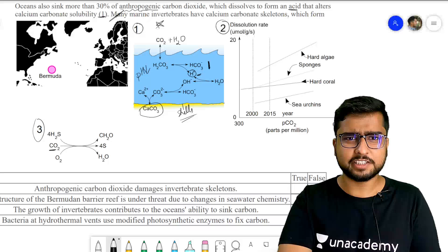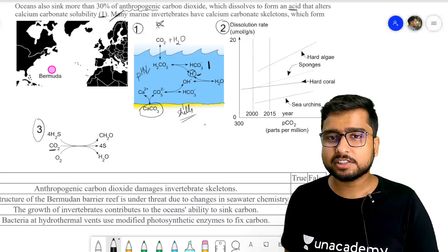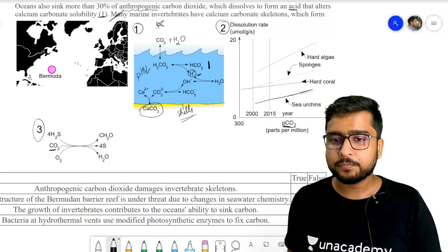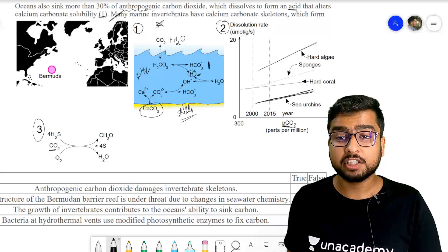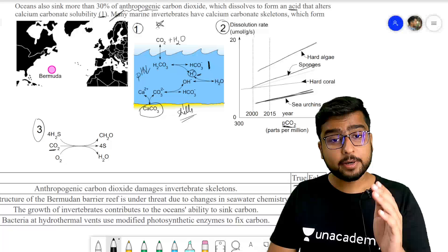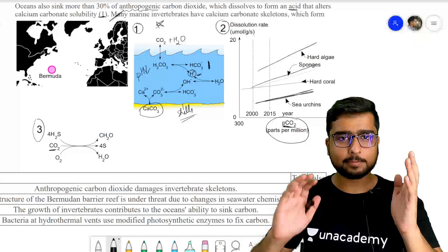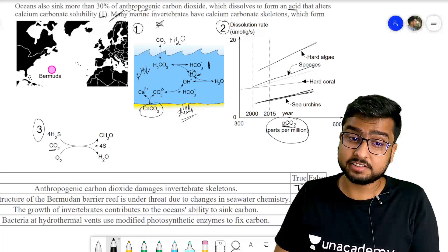The first statement is anthropogenic carbon dioxide damages the invertebrate skeleton. Ab yeh toh hume saaf dikha hai ki jaise CO2 level increase ho raha hai, sea urchins ka dissolution, skeleton ka dissolution rate, hard algae ka dissolution rate, sponges ka dissolution rate, yeh sab badh gaya hai. Yeh toh hume saaf dikha hai. So that is a totally true statement kyunki humare CO2 se jo hai invertebrate skeletons kharab ho raha hai. Yeh hume graph khud bata raha hai. X axis pe parts per million of CO2, CO2 ka concentration and the dissolution rate is on the y. Aapko yeh graph ko dekhke answer karna tha.